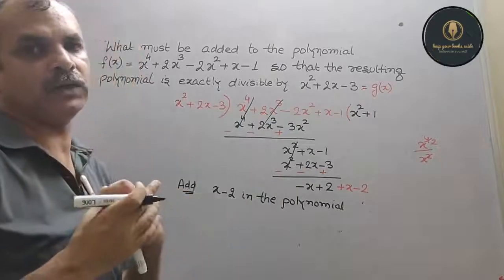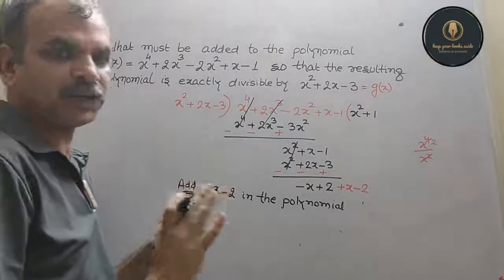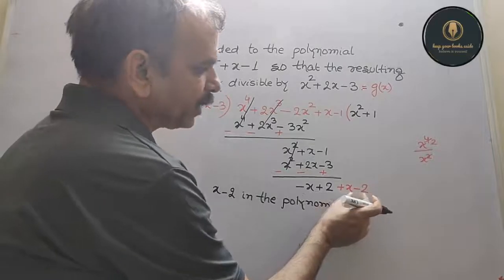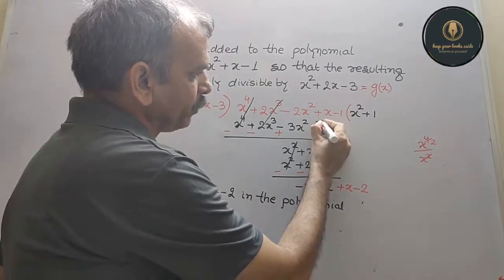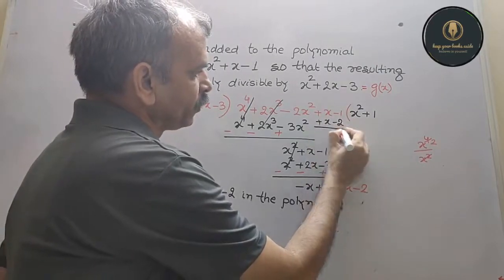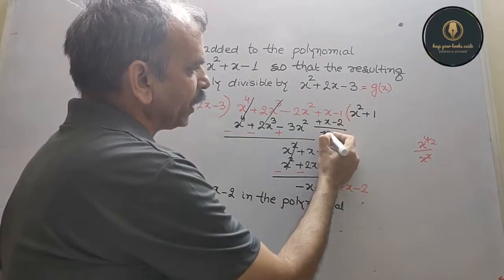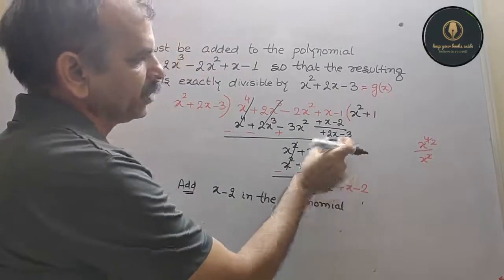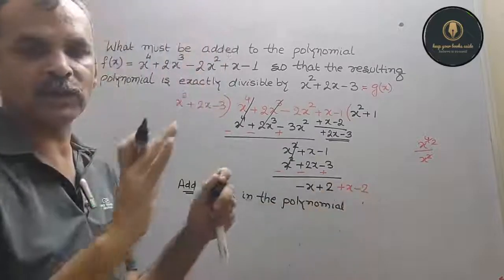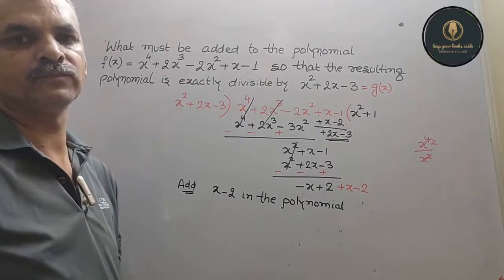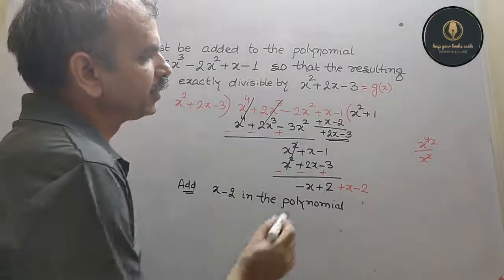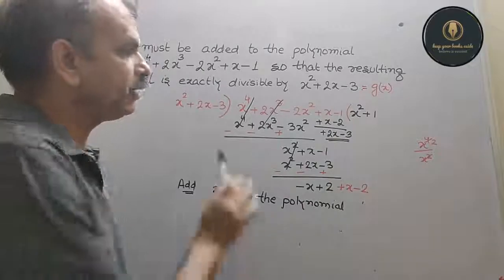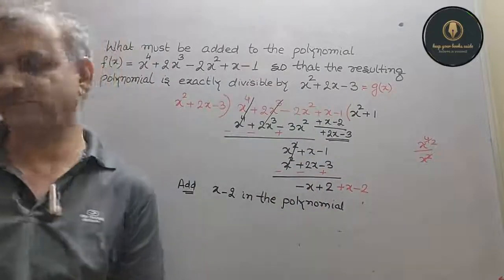The new polynomial will then have its last two terms as +2x - 3, making it fully divisible by g(x). So we only need to add x - 2, i.e., the opposite signs of the remainder, and then it will be fully divided.